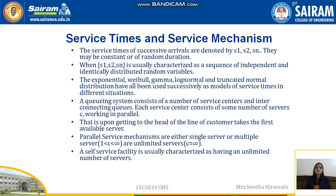A queuing system consists of a number of service centers and interconnecting queues. Each service center consists of some number of servers C working in parallel — upon getting to the head of the line, a customer takes the first available server. Parallel service mechanisms are either single-server, multi-server, or unlimited servers. A self-service facility is usually characterized as having an unlimited number of servers.